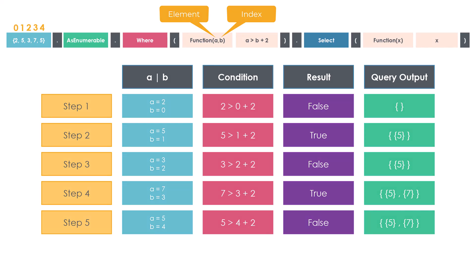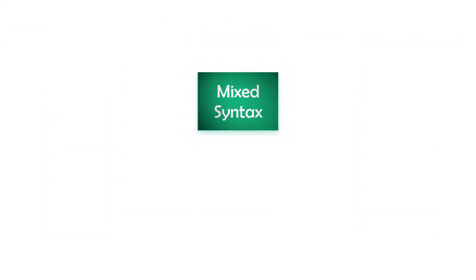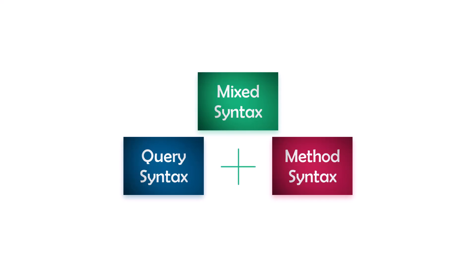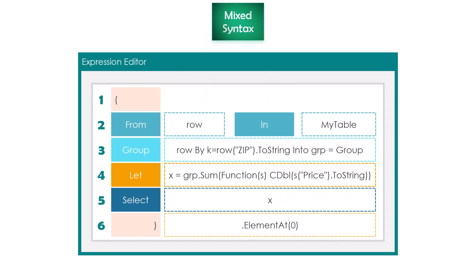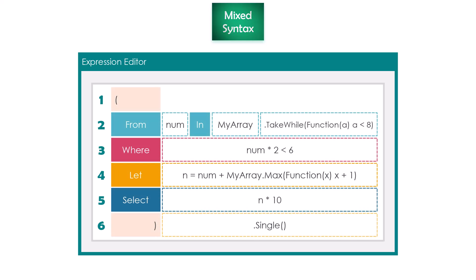The third way to write a LINQ query is mixed syntax — which is nothing but query syntax and method syntax at the same time. For example, a query can have the standard query syntax structure with from, group, let, and select operators used without lambda expression, but also include operators with lambda expression such as sum or elementAt. ElementAt is used without a lambda expression but as an extension method, belonging to method syntax. Using mixed syntax gives you a readable query, the ability to use any operator, and it's easy to understand.